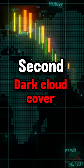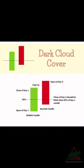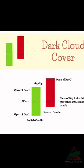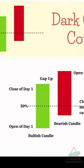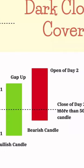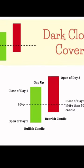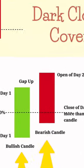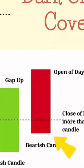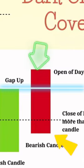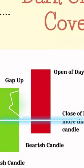Second, dark cloud cover. The dark cloud cover candlestick pattern indicates a bearish reversal — a black cloud over the previous day's optimism. It comprises two candlesticks: a red candlestick which opens above the previous green body and closes below its midpoint.